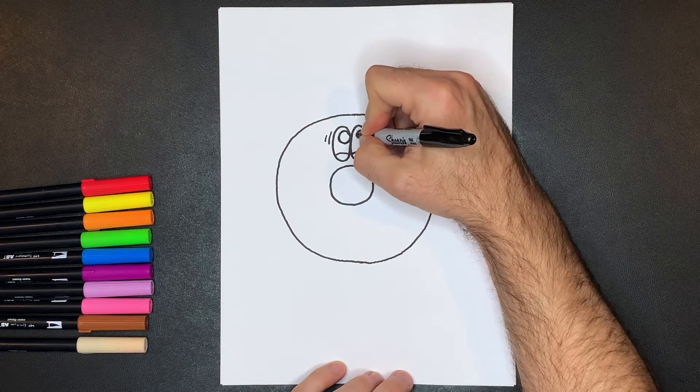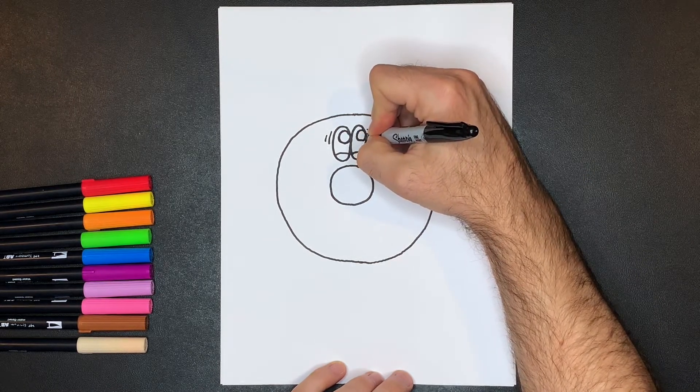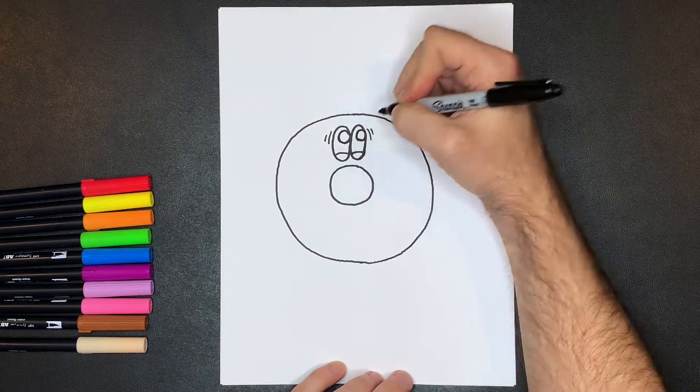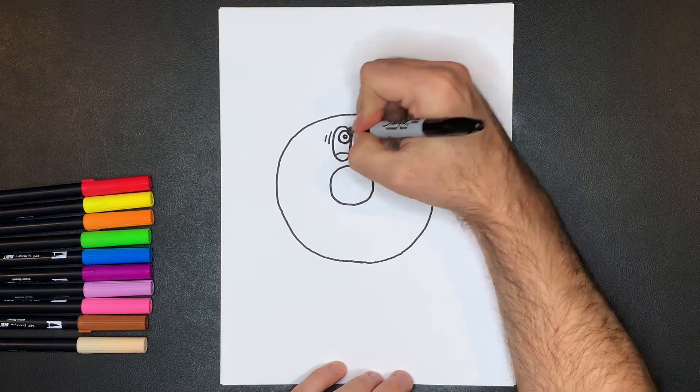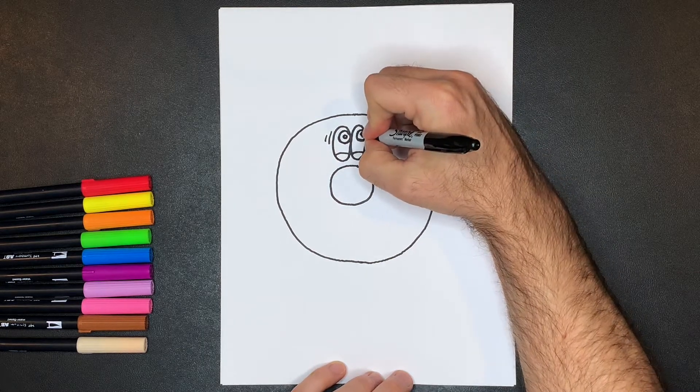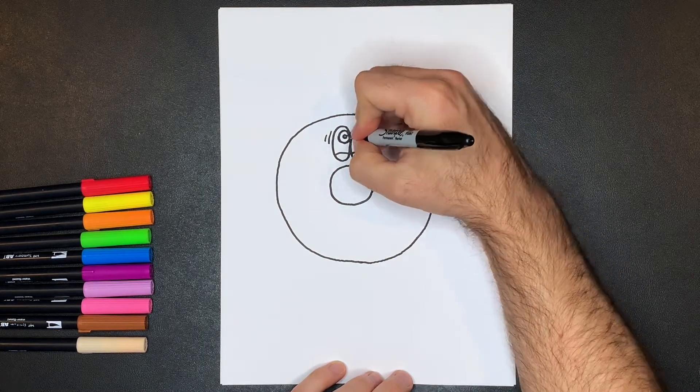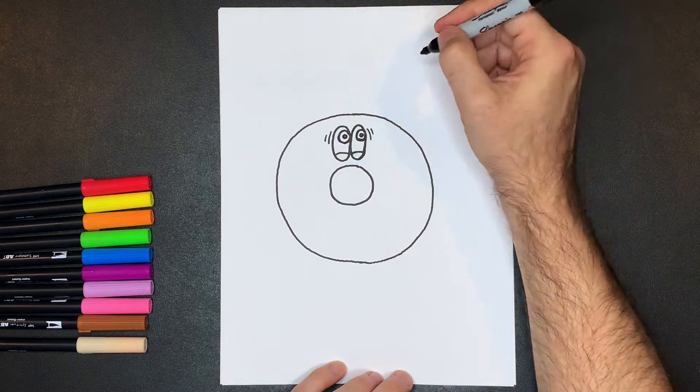Same thing over on this side, draw that circle in there like that, and we'll put the pupil in there. That's just going to be a little tiny circle, like that, and like that, and we'll leave that space open for the light source.